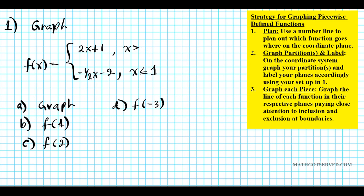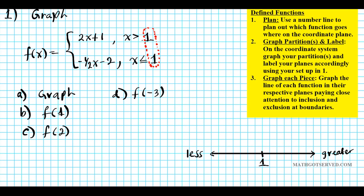Step one in our strategy is to formulate a plan. We want to see which function goes where in our coordinate system. To help us stay organized, we're going to draw a number line to give ourselves a visual. Remember, on the number line, heading towards the right means greater, and heading towards the left means less. The partition happens at 1 — we know that because the numbers to the right of our functions indicate where the partition happens. So we're going to mark 1 on our number line. This is just a one-dimensional representation of our two-dimensional graph.